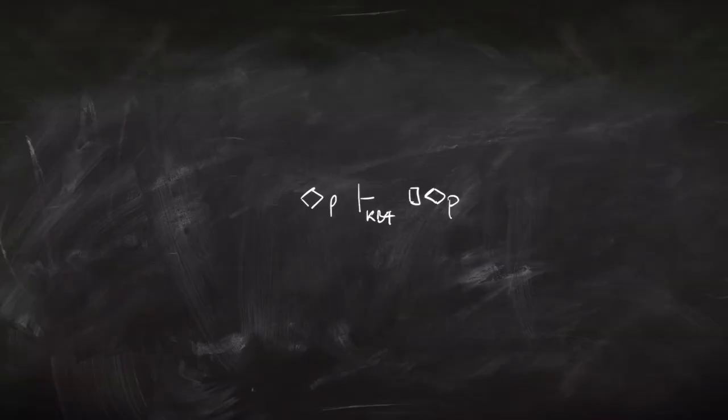If you know a bit about modal logic, you might think that looks a bit like the 5 axiom — from diamond P to box-diamond P. How can we prove that inference without using the 5 rule? The answer is: when we have the B rule in play, the 4 rule and the 5 rule are kind of equivalent. So when we've got the B rule and the 4 rule, we can simulate the 5 rule — that's how we can prove this sentence without having the 5 rule there explicitly.